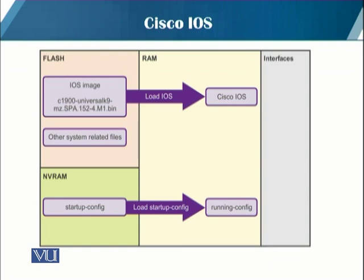The other file is a startup configuration file. The startup configuration file contains commands that are used to initially configure a router and create the running configuration file that is stored in the RAM. The startup configuration file is stored in NVRAM. All the configuration changes are stored in the running configuration file and are implemented immediately by the IOS.